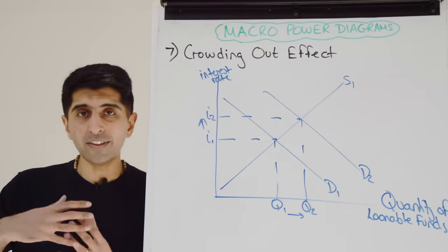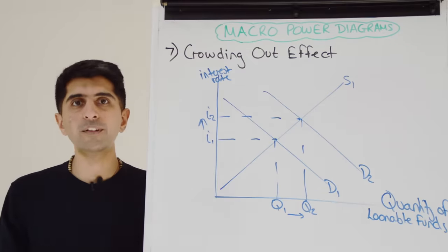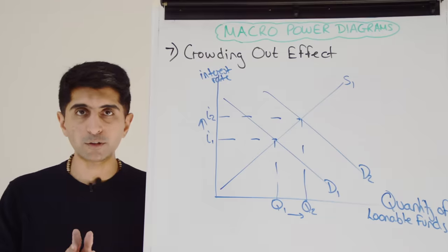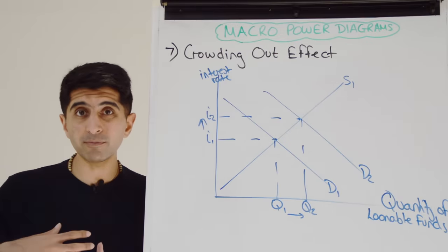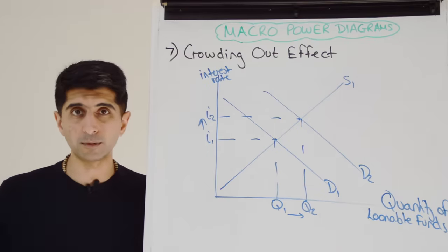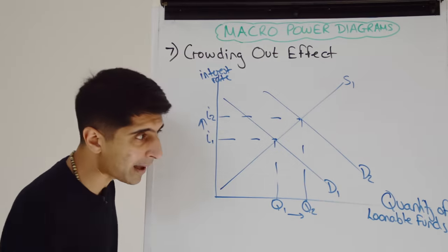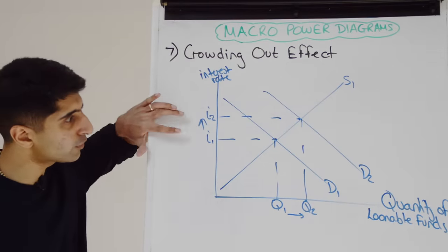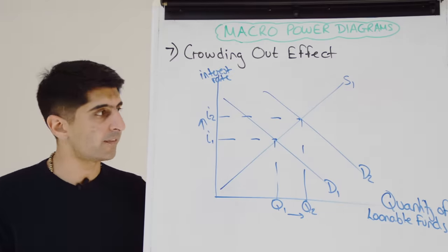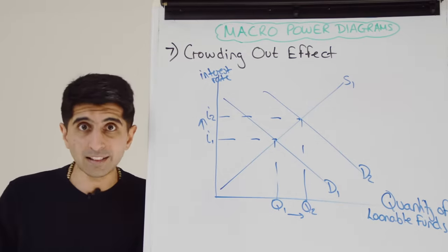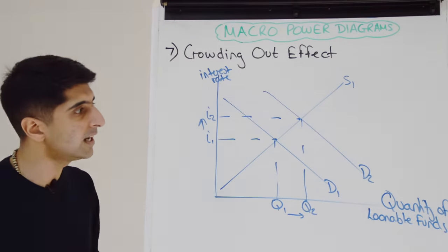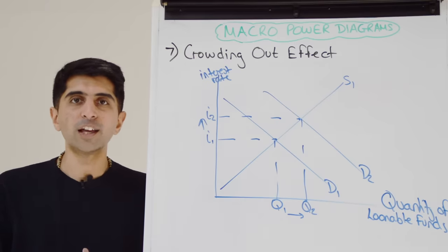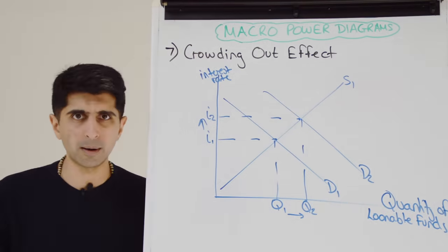Number seven is the crowding out effect — great evaluation of fiscal policy. If expansionary fiscal policy is government-spending heavy and that spending is borrowing-fuelled, it can crowd out private sector investment. Because if government spending is borrowing-fuelled, the government demands more loanable funds — more of people's savings by issuing bonds — increasing the demand for loanable funds and pushing up equilibrium interest rates. Higher interest rates deter private sector investment, crowding out the private sector, creating unbalanced economic growth with too much government activity and not enough private sector activity, impacting both short-run and long-term growth sustainability.